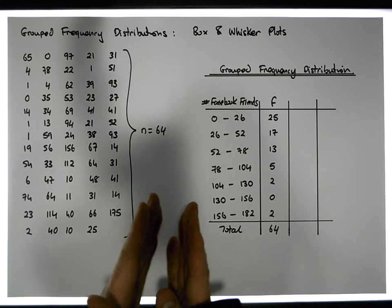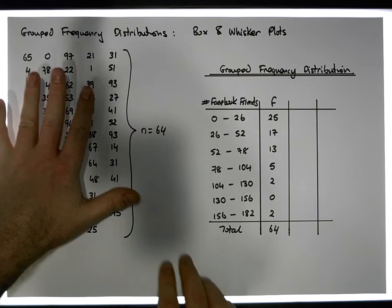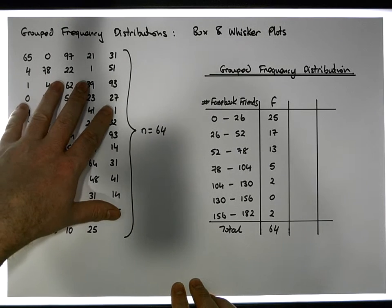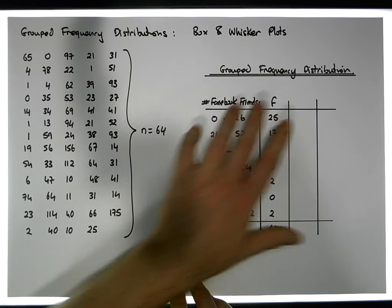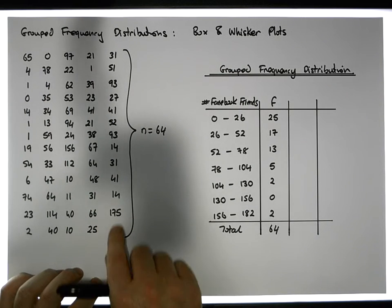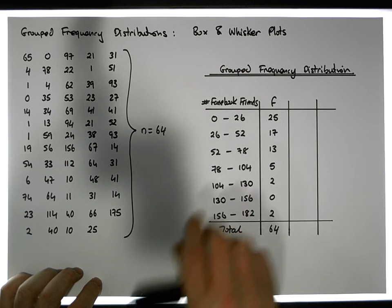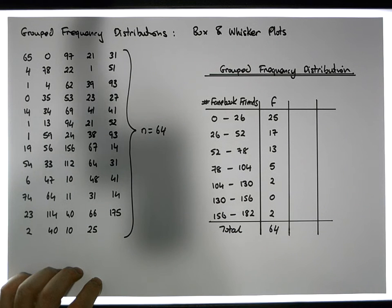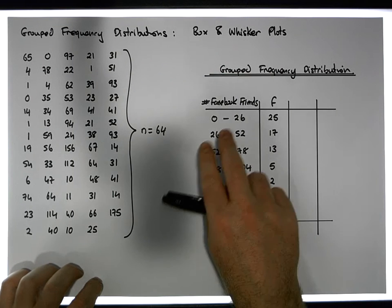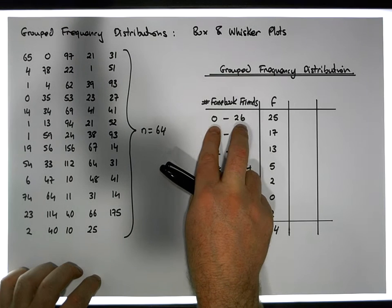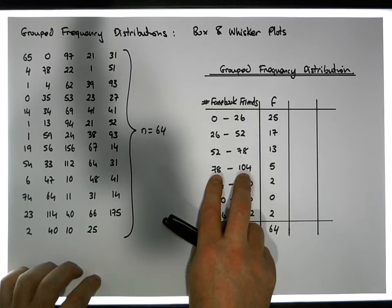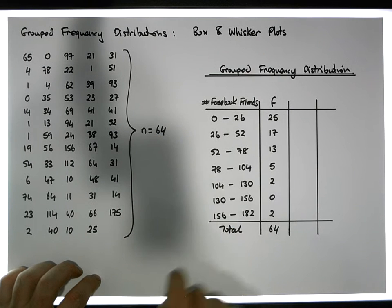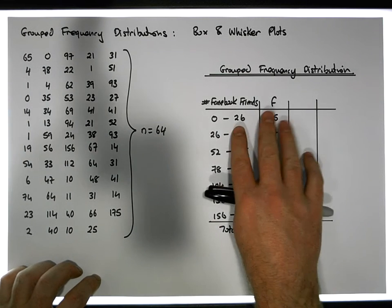In a previous video I showed how to construct a group frequency distribution from a raw data set. There are a number of steps to go through, and I'd recommend going back to one of those videos if you don't know how to convert a raw data set into a group frequency distribution. For our purposes here, the associated group frequency distribution has seven classes with class widths of 26.